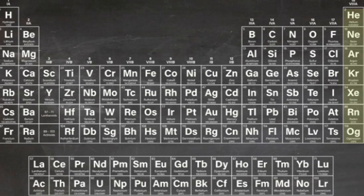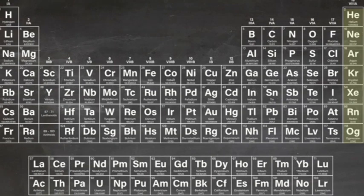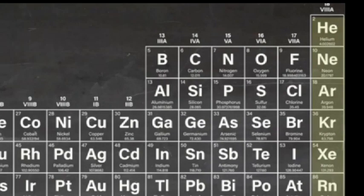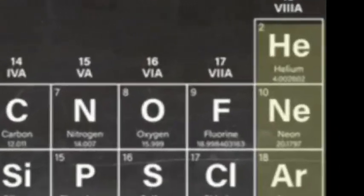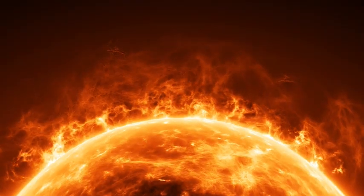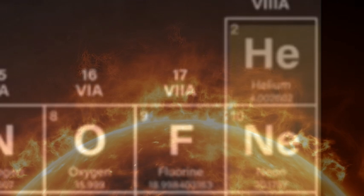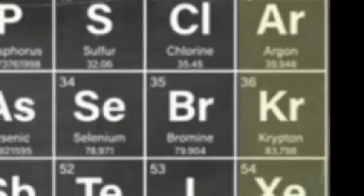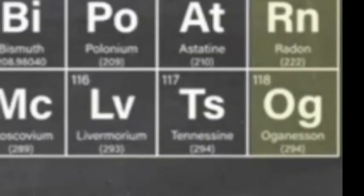Noble gases. The noble gases comprise group 18. They're generally very stable, colourless and odourless. The 'noble' part of their name actually arises from the German word 'Edelgas', which means unreactive. Helium is the second most abundant element in our universe and was discovered on the Sun before it was found on Earth. It, along with neon, is one of two elements that have never been observed to bond with another element in a compound. Oganesson is the first artificial element to be classed as a noble gas.